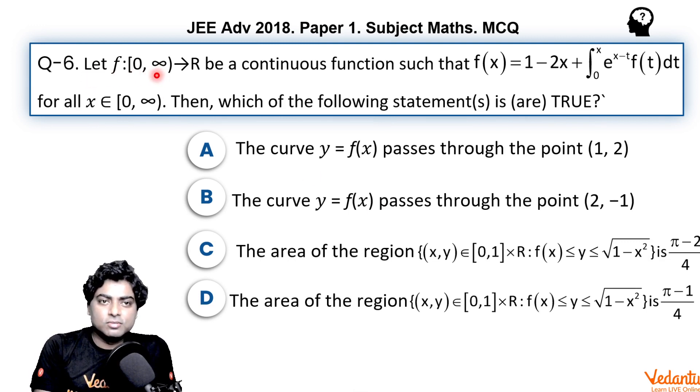Let f from [0, infinity) to R be a continuous function such that f(x) equals 1 minus 2x plus integral from 0 to x of e^(x-t) f(t) dt. Here, x and t both are involved inside the integral sign, for all x belongs to [0, infinity).